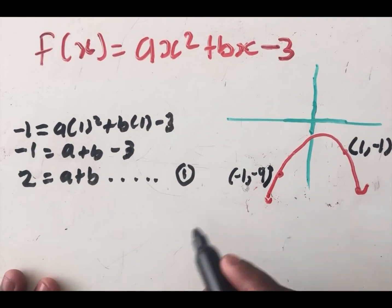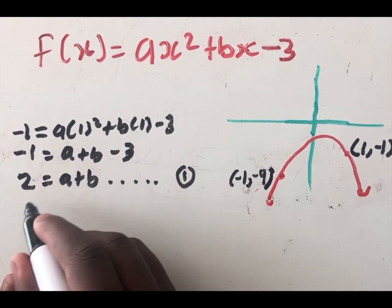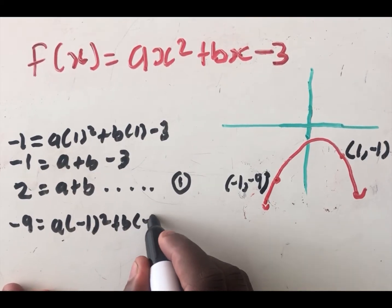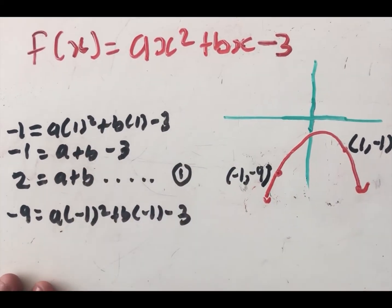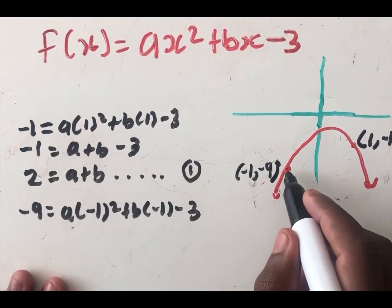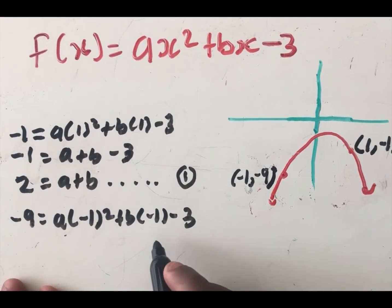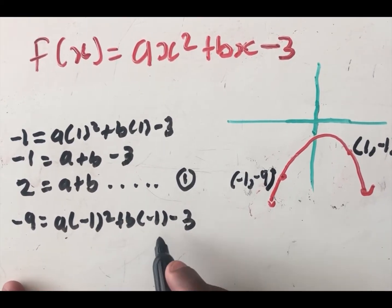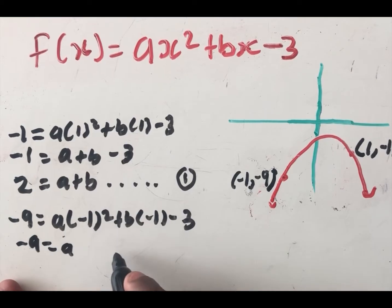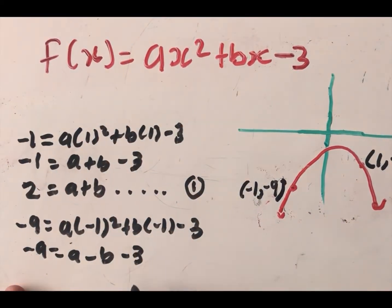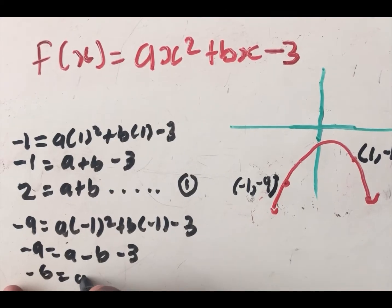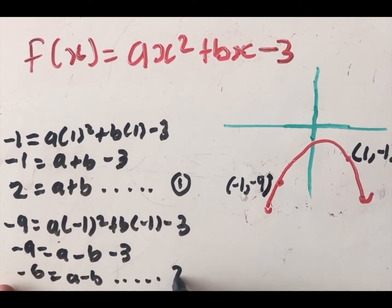Now substituting the second point — y = −9, x = −1: −9 = a(−1²) + b(−1) − 3, which simplifies to a − b = −6. This is equation 2. Now we can solve simultaneously.